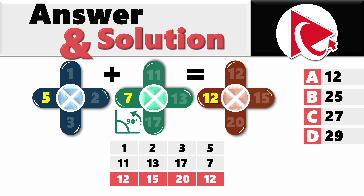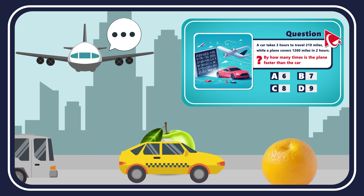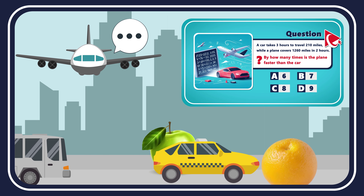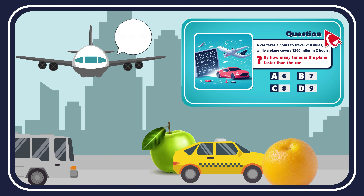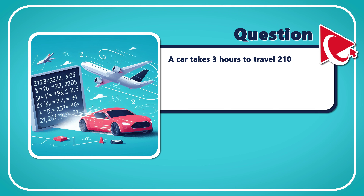Solving this challenge reminded me of an old joke. The car said to the plane: 'Comparing our speeds is like comparing apples to oranges.' And the plane's response was: 'Well, at least I'm flying high while you're down there dealing with traffic jams.' With that in mind, here's the problem: a car takes three hours to travel 210 miles, while a plane covers 1,260 miles in two hours. By how many times is the plane faster than the car?